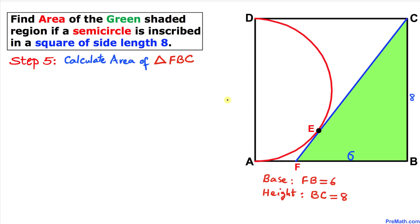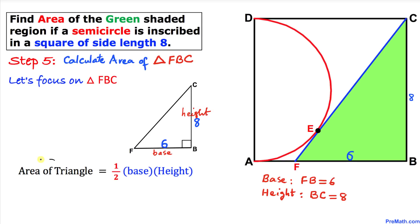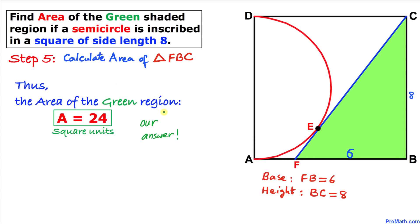For the final step, let's calculate the area of the green shaded triangle FBC. With base FB equals 6 and height BC equals 8, using the triangle area formula: Area equals one-half times base times height equals one-half times 6 times 8 equals 24 square units. That's our final answer. Thanks for watching, and please don't forget to subscribe to my channel for more exciting videos!